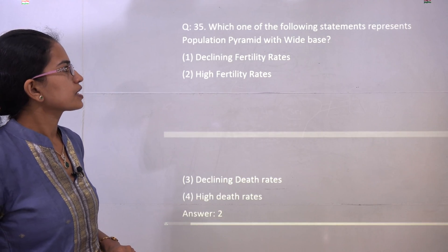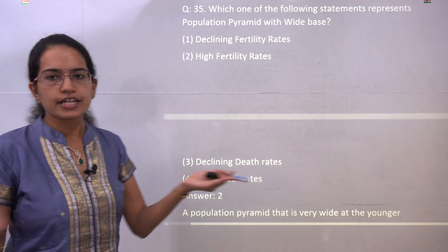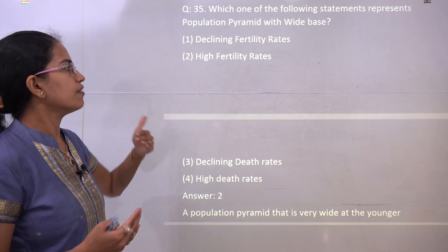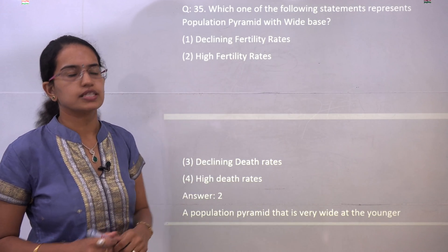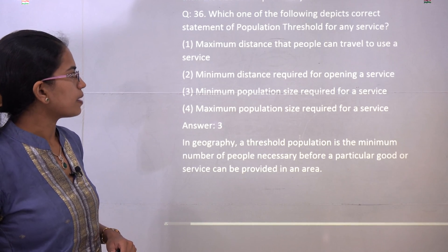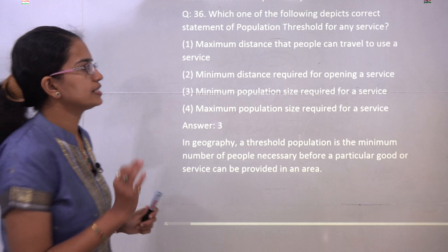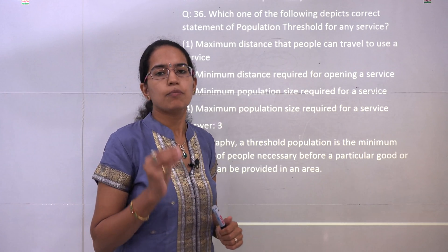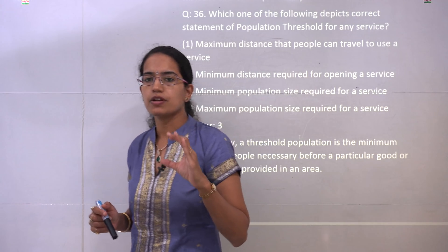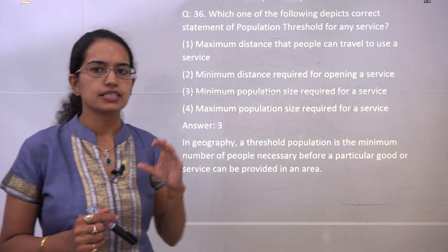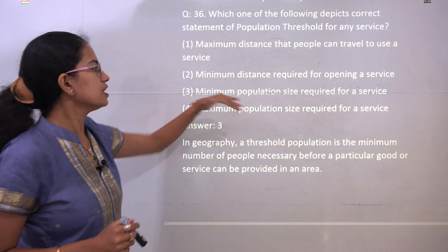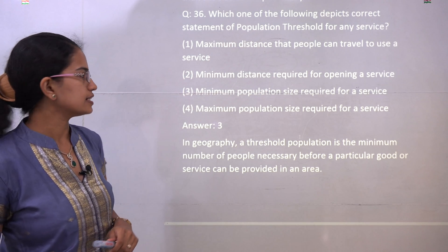A population pyramid with a wide base would reveal a very high fertility rate or birth rate, so option 2 is the correct answer. The next question talks about population threshold — this means the minimum number of people that a service can serve, which becomes the population threshold for that service. So option 3 is the correct answer.